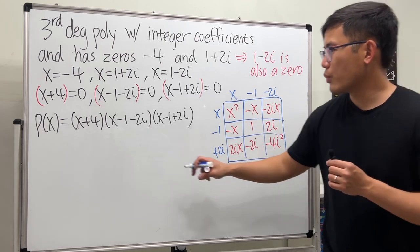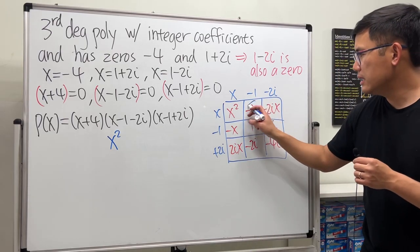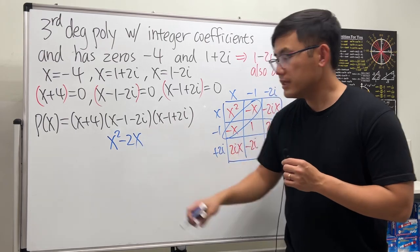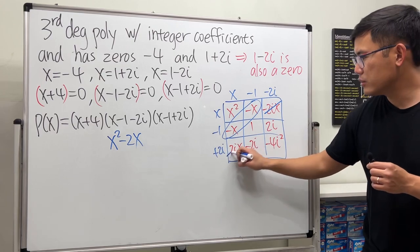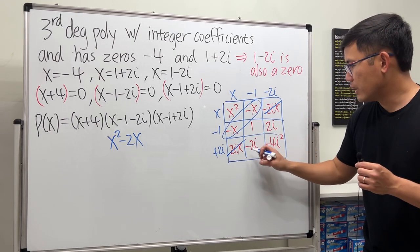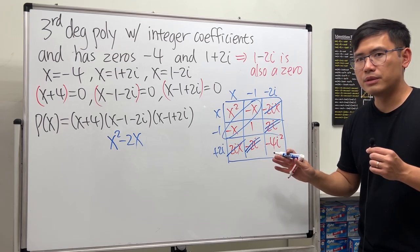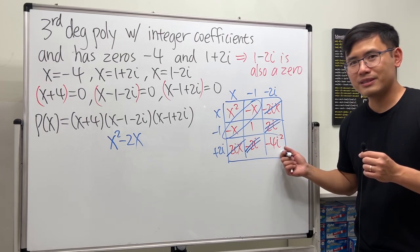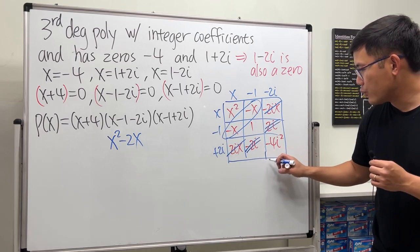Now let's combine terms. We have x², then these two are the same, so -2x. Look, the -2ix cancels out with the positive 2ix. The 2i and -2i cancel out each other as well, so no more complex numbers.